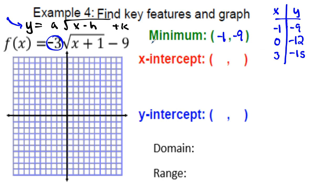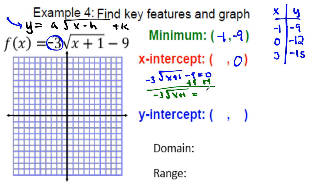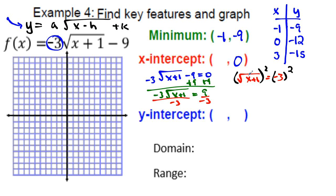To find the x-intercept, set the equation equal to zero and solve. Move the 9 over: −3√(x + 1) = 9. Divide by −3: √(x + 1) = −3. Square both sides. But a radical equal to a negative is an extraneous solution — this graph will not cross the x-axis.